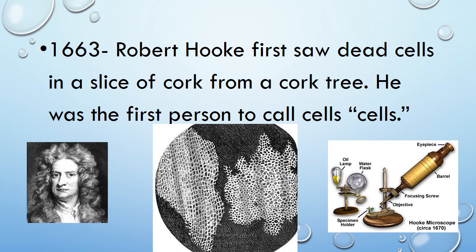In 1663, nearly a hundred years later, Robert Hooke was the first person to see cells — dead cells in a slice of cork from a cork tree. He was also the first to call them 'cells.' His drawings of these cells are shown in the middle of your screen. He called them cells because a cell is just a room — the same word we use for jail cells. He thought these spaces looked like little rooms, so he called them cells, and that's the word we still use today.